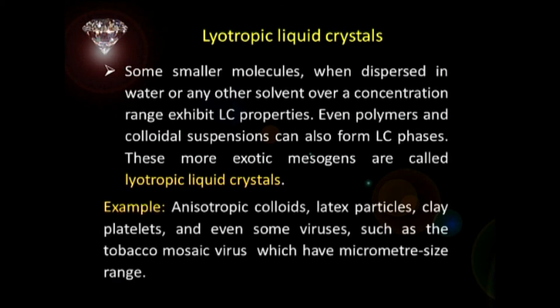These more exotic mesogens are called lyotropic liquid crystals. There are several examples, like anisotropic colloids, latex particles, clay platelets, and even some viruses such as the tobacco mosaic virus, which have micrometer size range.